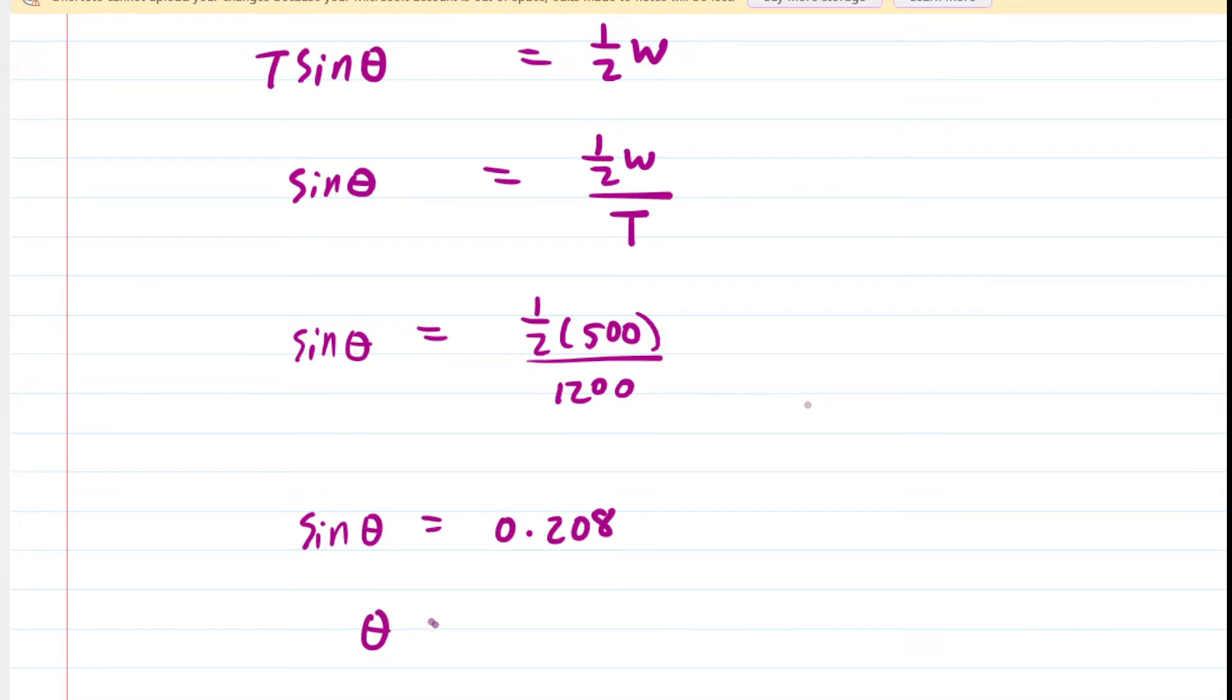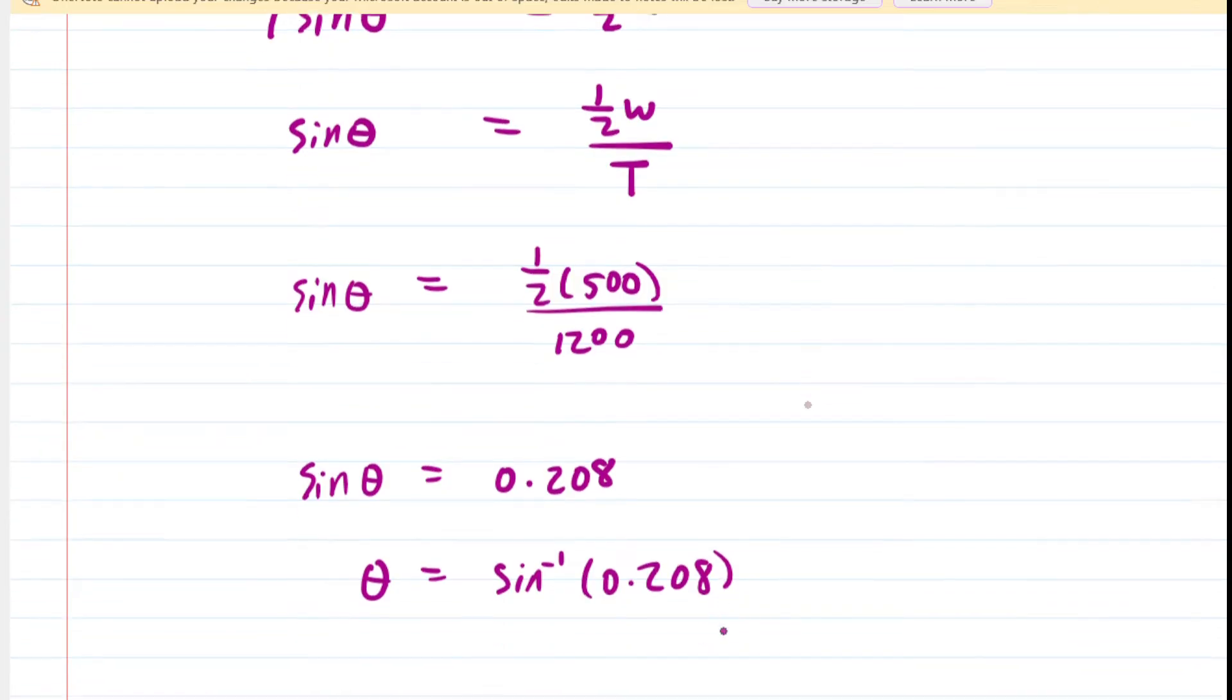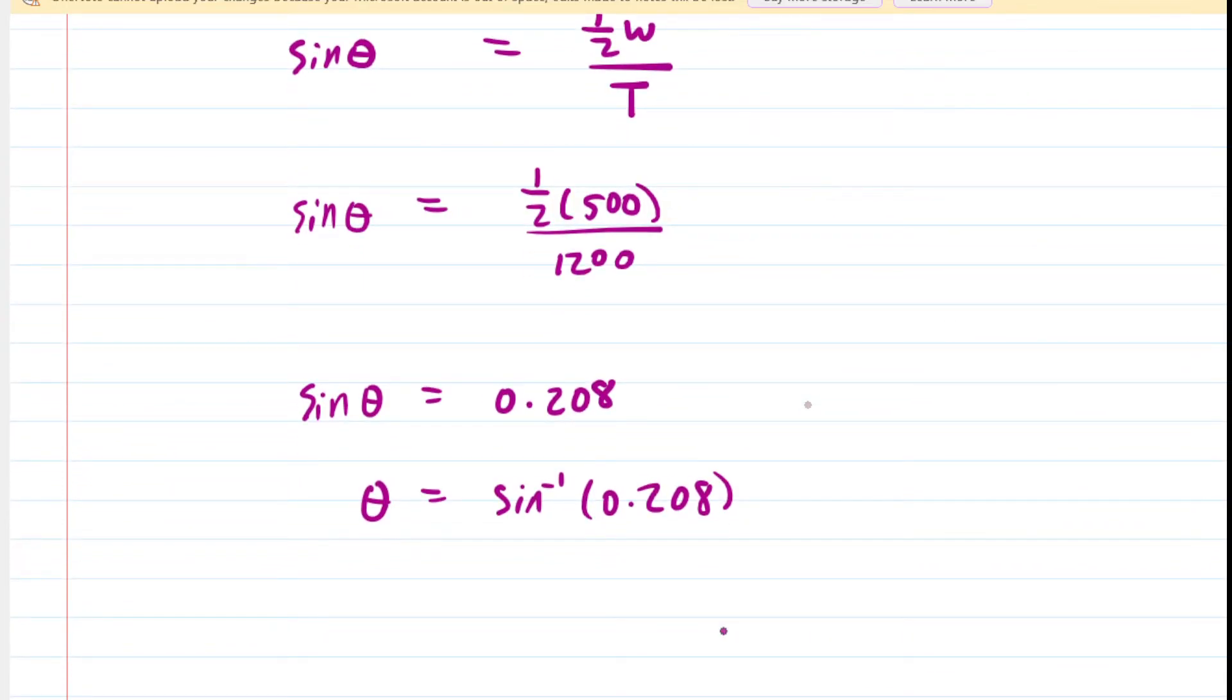And then you take the inverse sine to solve for theta. So we'll take the inverse sine of that decimal and make sure your calculator is in degree mode. And when you do that, you would see that theta is approximately 12.0 degrees.